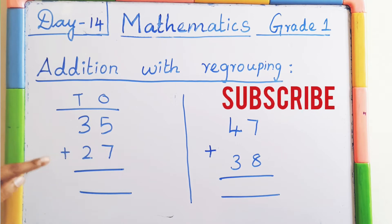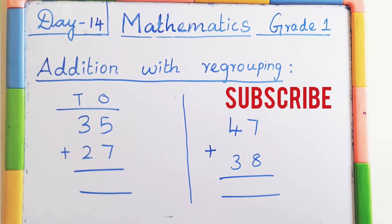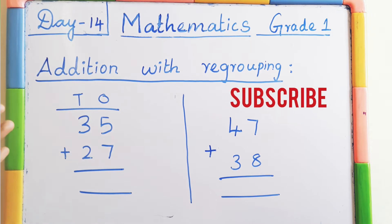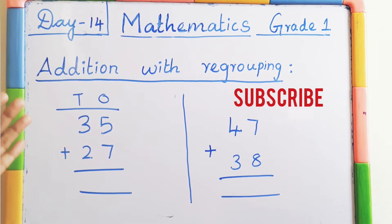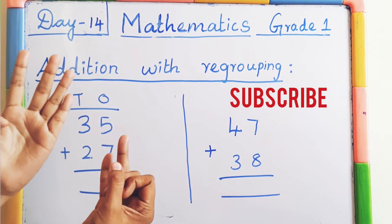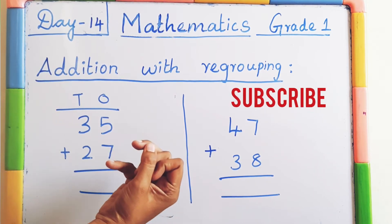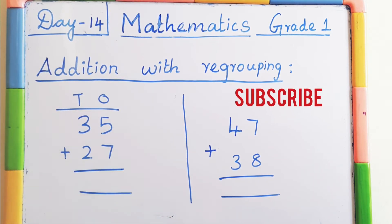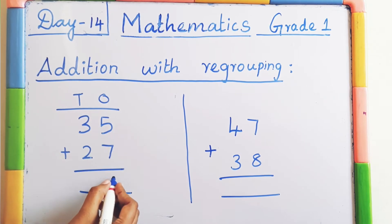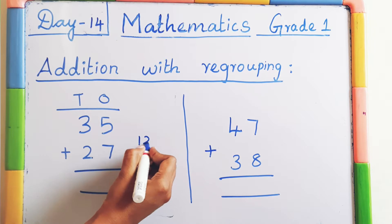So 5 plus 7 — we have to add these two numbers. Keep 5 in the mind, 7 on the fingers. After 5: 6, 7, 8, 9, 10, 11, 12. So you got the two-digit number 12. We should write 12 here.